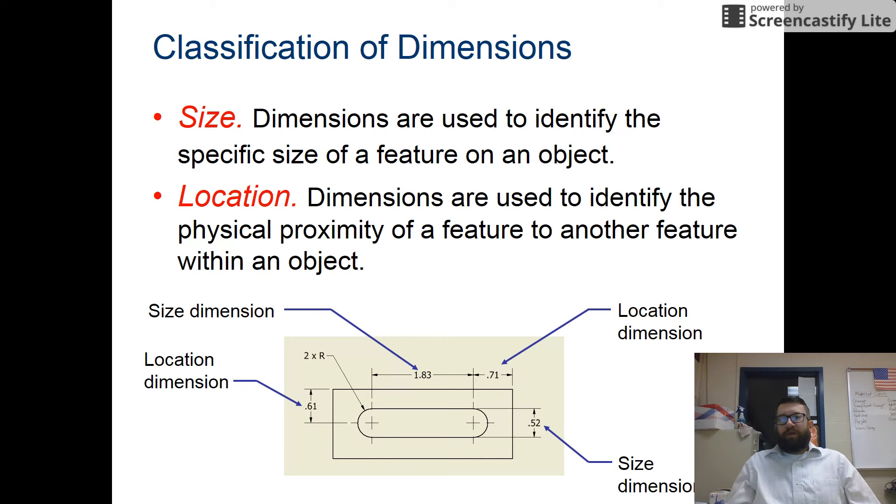So we really want to dimension two classifications. We want to have the size. So the specific size of a feature, for example, 1.83 inches. But sometimes we also need location to identify the proximity of a feature to another feature within the object. So here, the 0.71 says that this dot, or this hole, is 0.71 inches away from the edge. Or, in this case, 0.61 inches down from the top. So you always need size and location of your dimension features.